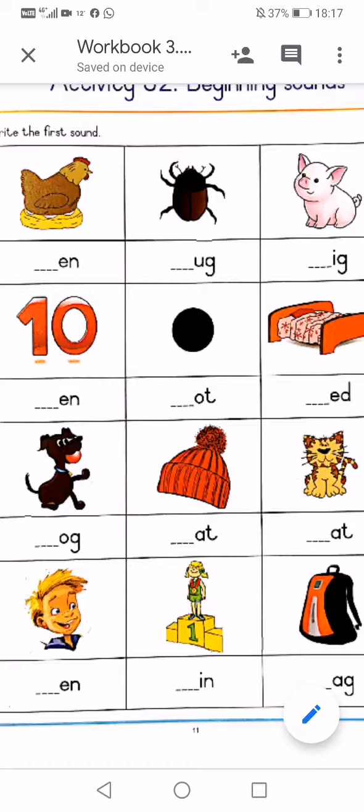Then there's a bug: B-U-G. And then a pig: P-I-G. You say the word and fill in the missing sound on the line under the picture.